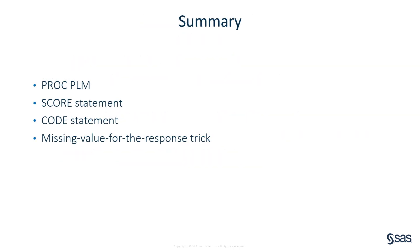In this video, we have introduced you to three new ways of scoring predictive regression models. The SCORE statement can score your regression models at the same time the model is fit, while PROC PLM and the CODE statement can score your regression models at fit time or after the model is fit. The missing value for the response trick enables you to generate predictions in any modeling situation. I hope you have found this presentation helpful. Thanks for watching.